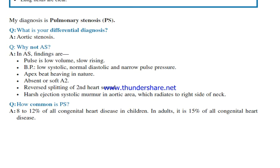What is your differential diagnosis? Aortic stenosis. Why not aortic stenosis? In aortic stenosis, the pulse is low volume and slow rising; blood pressure shows low systolic, normal diastolic, and narrow pulse pressure. Apex beat is heaving in nature. A2 is absent or soft. There is reversed splitting of the second heart sound. The harsh ejection systolic murmur is in the aortic area and radiates to the right side of the neck.